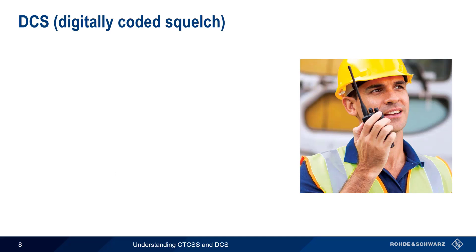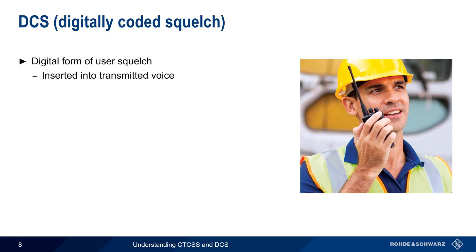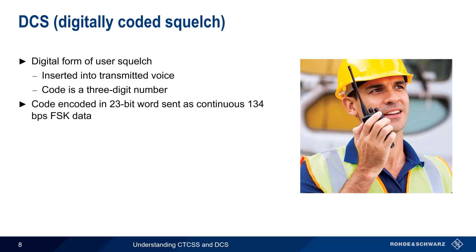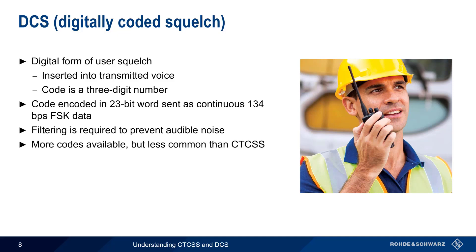The other common form of user squelch is called DCS, which stands for Digitally Coded Squelch. As the name implies, it is a digital form of user squelch. Similar to CTCSS, DCS inserts a code into the transmitted voice, with the code being in the form of a three-digit number. This three-digit code is encoded into a 23-bit word that is sent as continuous FSK, or Frequency Shift Keying data, at approximately 134 bits per second. And like CTCSS, filtering is required to prevent harmonics of this FSK signal from creating audible noise. DCS has the advantage that it provides many more codes than CTCSS, but is less commonly used.